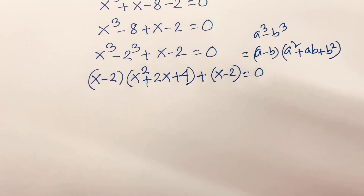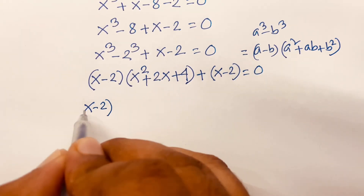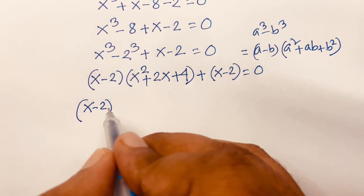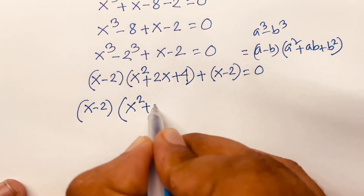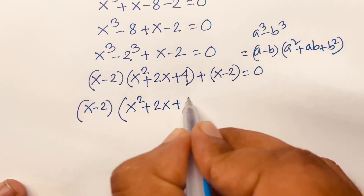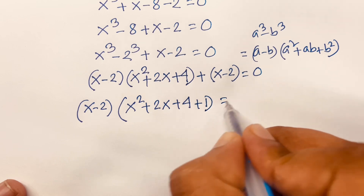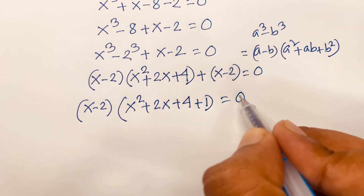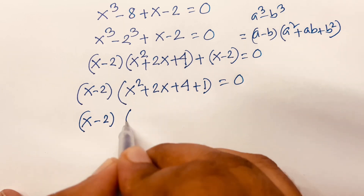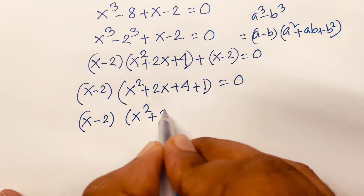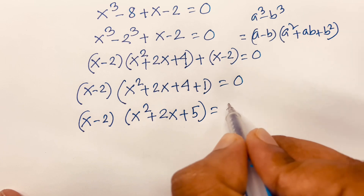Then (x minus 2) is common. Factoring it out: (x minus 2)(x squared plus 2x plus 4 plus 1) is equal to 0, which gives (x minus 2)(x squared plus 2x plus 5) is equal to 0.